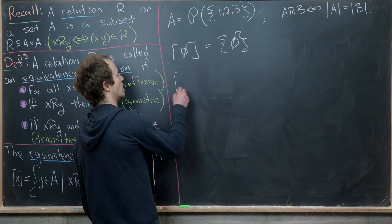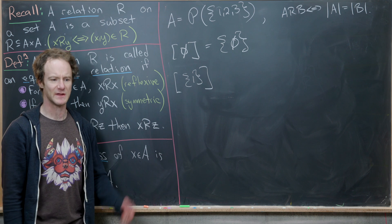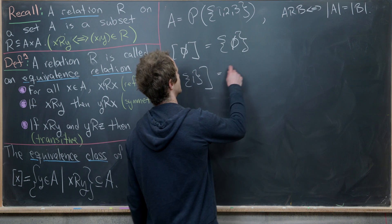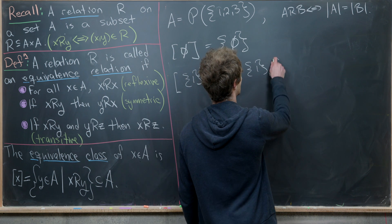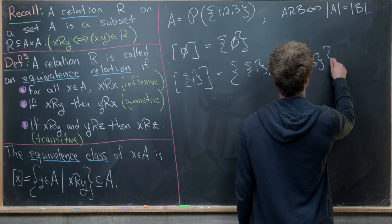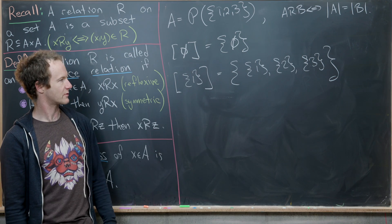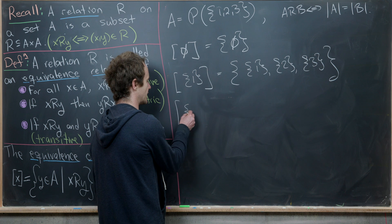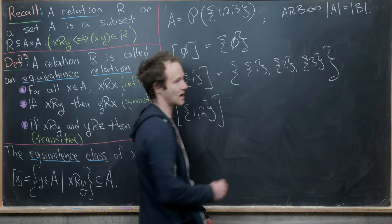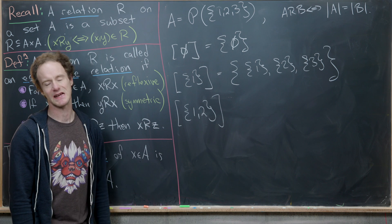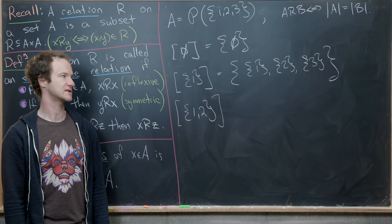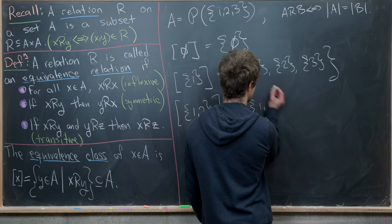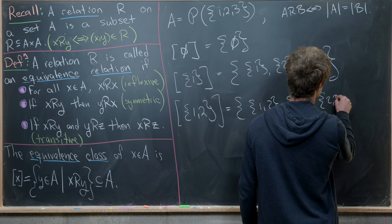Next, the equivalence class of a singleton, say {1}, is the set of all singletons: {{1}, {2}, {3}}. Those are all related because they each have a single element. For the equivalence class of a doubleton, like {1, 2}: we get {{1,2}, {1,3}, {2,3}} — all two-element subsets, which are equivalent because they have the same number of elements.